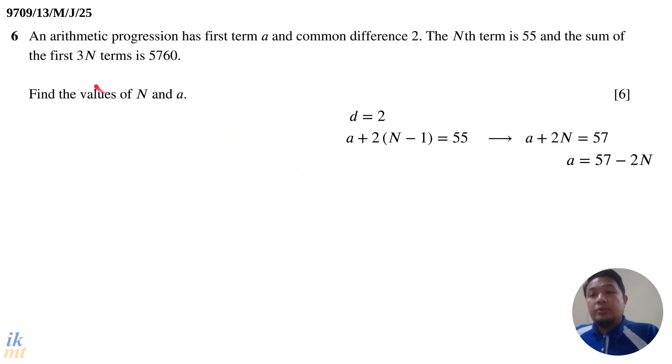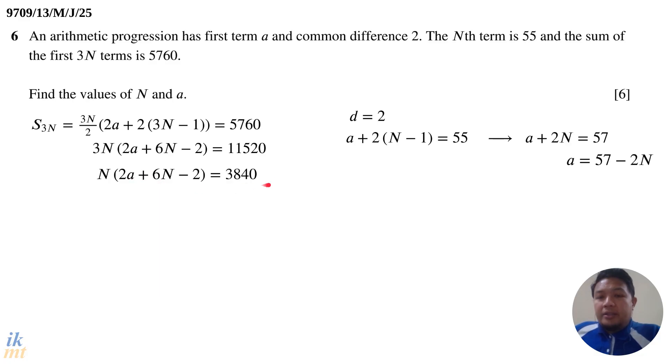The second equation will relate to the fact that the sum of the first 3N terms in this arithmetic progression is 5760. So we set it up. The formula is all available in the MF-15, just apply the appropriate values. Replace our N with 3N here, replace the d with 2, and set it to be equal to 5760. Now of course it's better to simplify this. We can multiply by 2, divide by 3, divide by 2 and we'll get this equation.